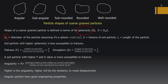For coarse-grained particles, there are five shapes: angular, sub-angular, sub-rounded, rounded, and well-rounded. Shape is expressed in terms of sphericity — the ratio of the diameter of the particle assuming it is a sphere to its length. A soil particle with higher sphericity is less susceptible to fracture. Particles are also described by flatness (width to thickness ratio) and elongation (length to width ratio); a particle with higher flatness and elongation values is more susceptible to fracture.